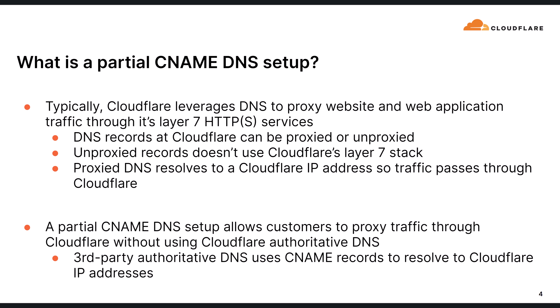So what is a partial CNAME DNS setup? Typically, Cloudflare leverages authoritative DNS to direct queries to Cloudflare's layer 7 reverse proxy rather than directly to the origin. However, in a case where Cloudflare isn't the authoritative DNS server, Cloudflare can't set the IP address of a DNS record to point to its layer 7 reverse proxy. A partial CNAME setup allows an organization to configure a zone within Cloudflare but use a third party for authoritative DNS. The third party authoritative DNS uses CNAME records to ultimately send traffic to Cloudflare's layer 7 reverse proxy.